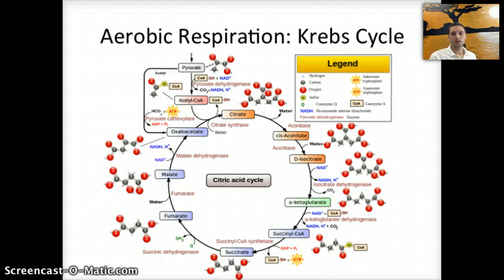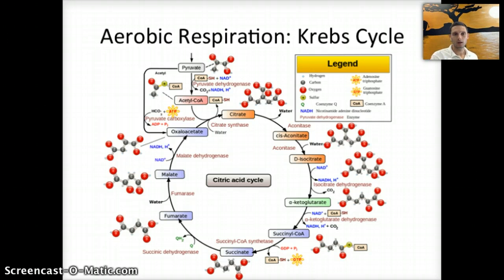During the link reaction, the pyruvate is converted into acetyl-CoA, which starts the Krebs cycle, and during that process a CO2 molecule is released. That pyruvate from glycolysis was a three-carbon molecule, and when the CO2 is released it becomes a two-carbon molecule. To start the Krebs cycle, that two-carbon acetyl-CoA is combined with a four-carbon molecule called oxaloacetate to create citrate.